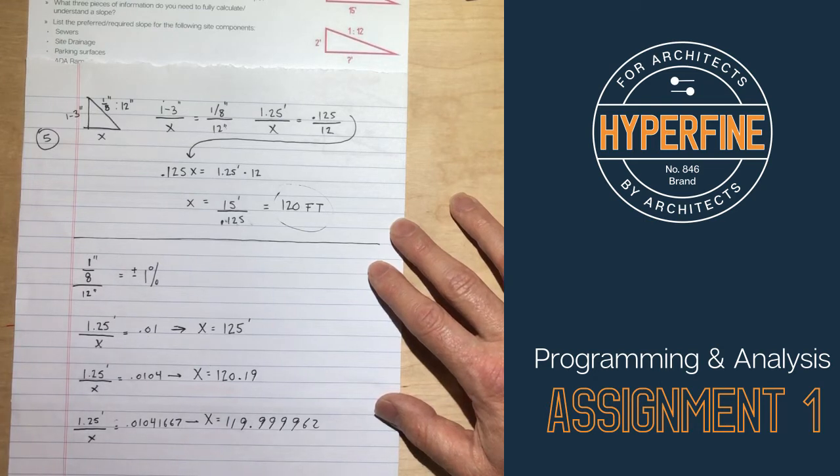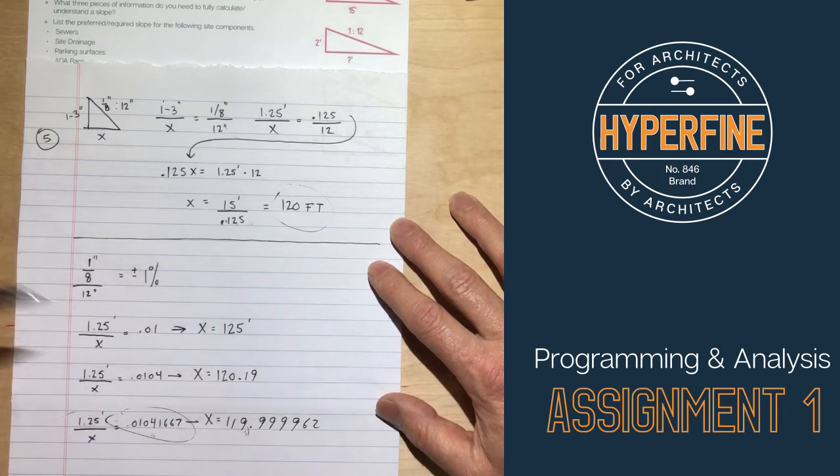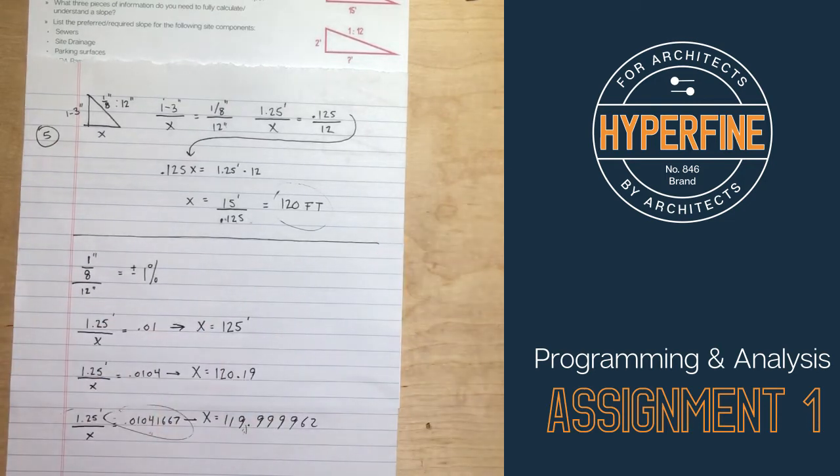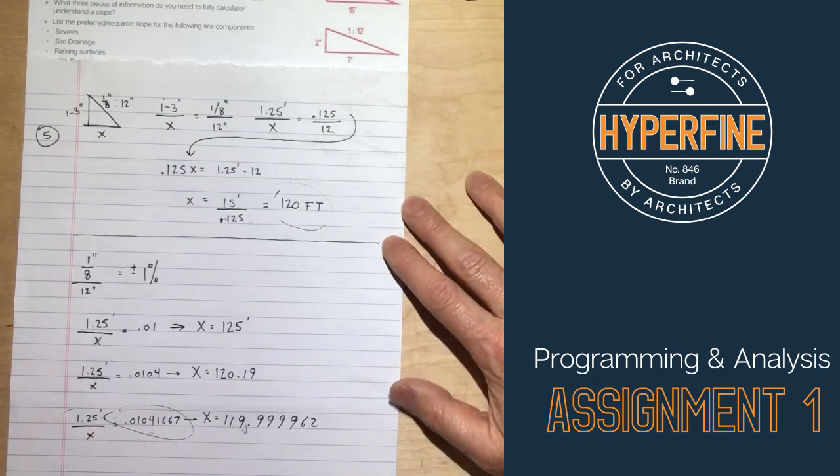But when I'm doing these problems, I don't round until the end. So if I was solving this problem mathematically, I would type in this whole value here, this 0.010416667, and end up with an answer like this, and then I would round. Because if you start rounding too early, you know, you can maybe get out of the tolerance on the exam. And I don't know what that is. I don't know if anyone does.